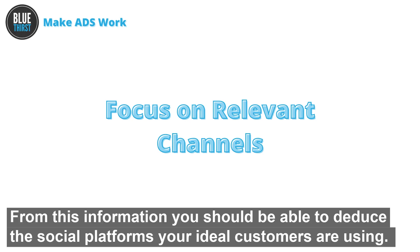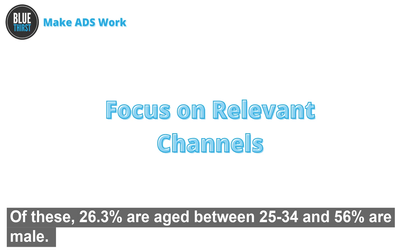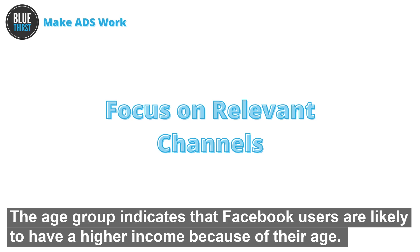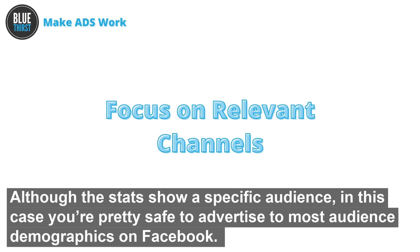From this information you should be able to deduce the social platforms your ideal customer is using. For example, Facebook has 2.7 billion monthly active users. Of these, 26.3% are aged between 25 and 34 and 56% are male. The age group indicates that Facebook users are likely to have a higher income because of their age. You could take that data a lot of ways, but 2.7 billion users is a huge audience, and it also shows that people aren't quite ditching Facebook just yet, although the stats show a specific audience.